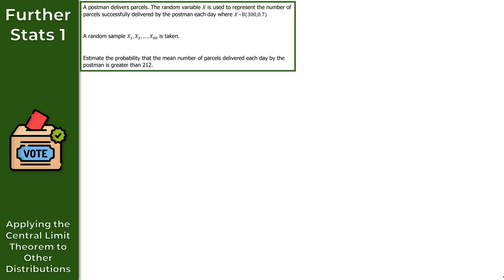For question 2, a postman delivers parcels. The random variable X represents the number of parcels successfully delivered each day, where X follows a binomial distribution with parameters n equals 300 and p equals 0.7. A random sample x₁, x₂, … up to x₈₀ is taken, and we need to estimate the probability that the mean number of parcels delivered each day is greater than 212.